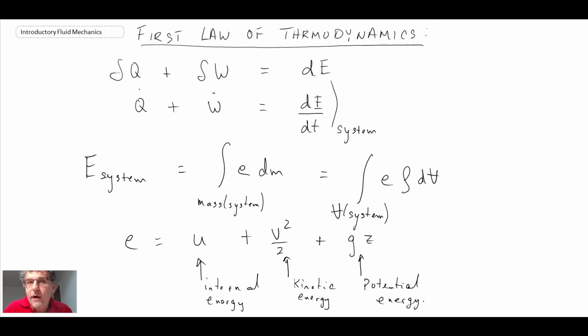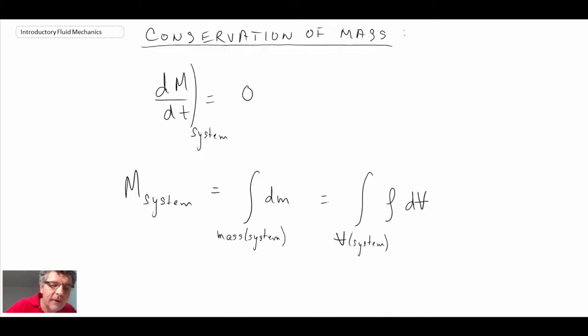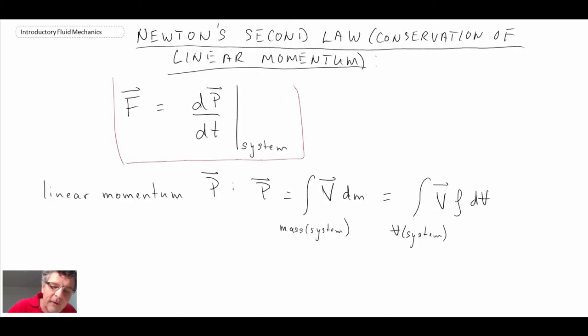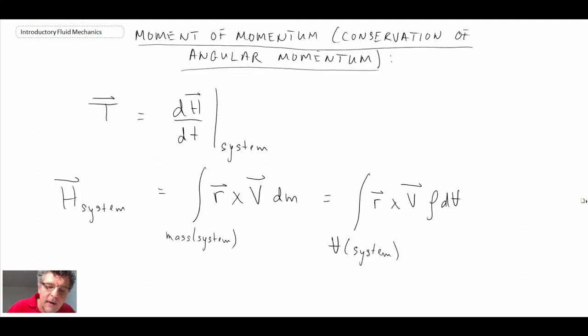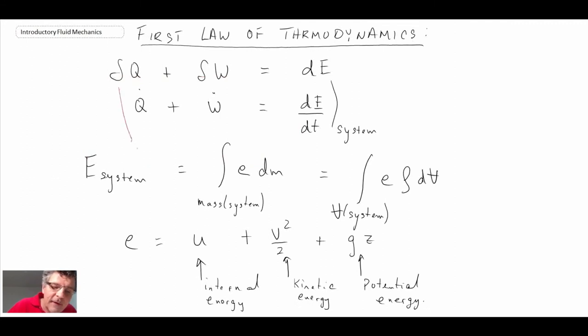Those are the different laws: mass, linear momentum, angular momentum, and the first law of thermodynamics. One thing to notice: in all our governing equations, we have this time rate of change derivative. What we need to do is translate from the fixed mass reference frame to a control volume where mass crosses the boundary.